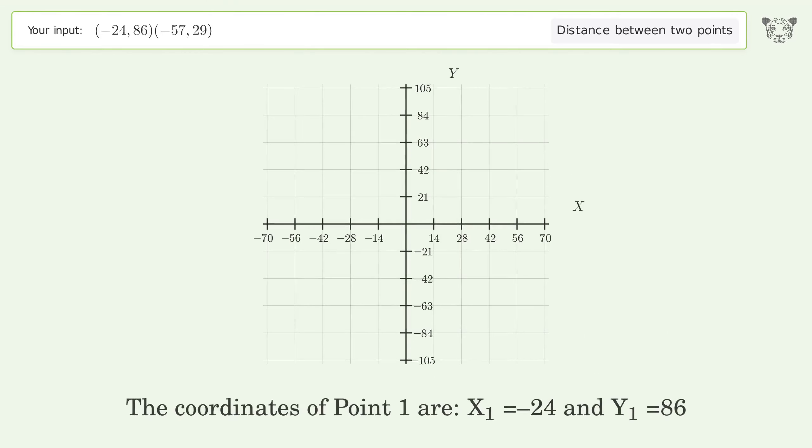The coordinates of point 1 are x1 equals negative 24 and y1 equals 86. The coordinates of point 2 are x2 equals negative 57 and y2 equals 29.